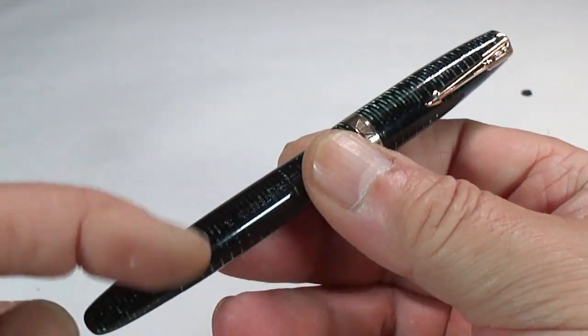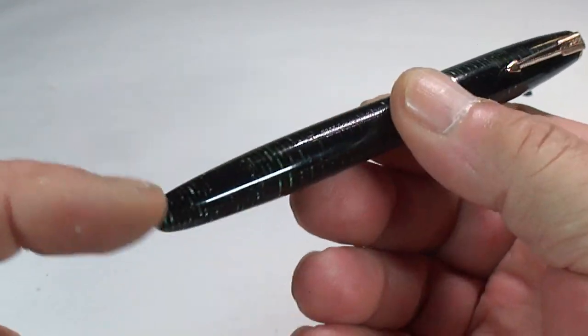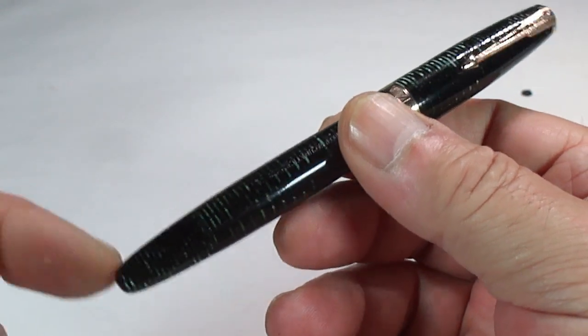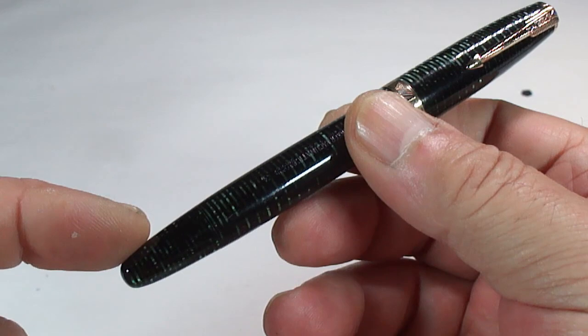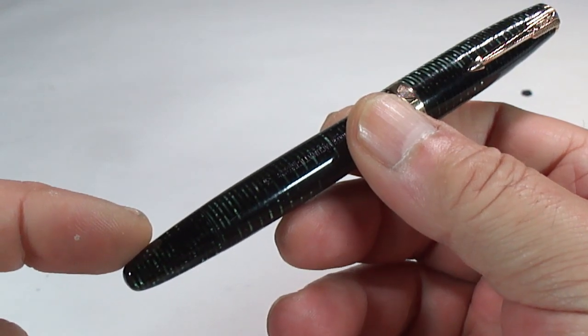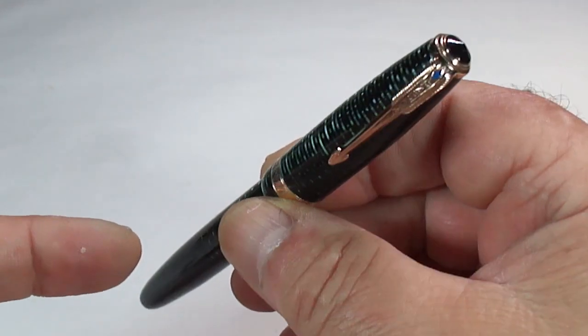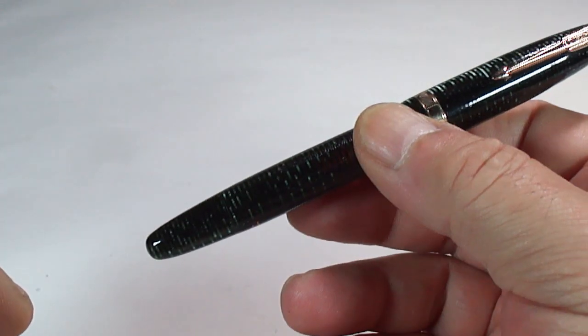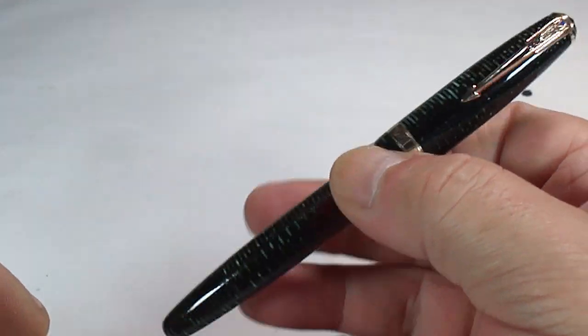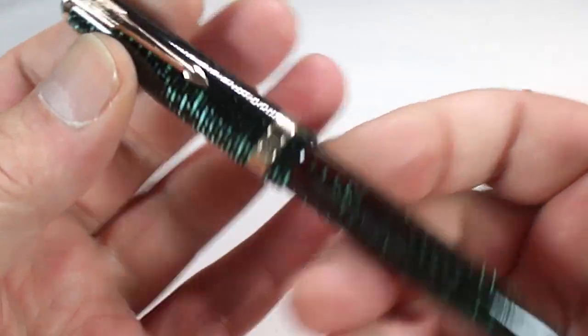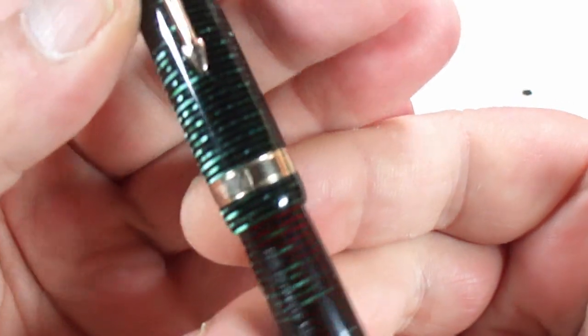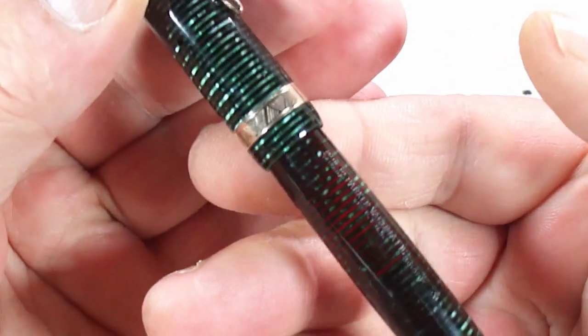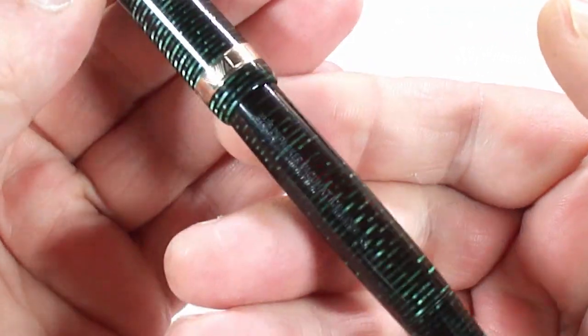So we've got a Parker Vacumatic. This is the third generation with the, as we've just shown you, with a plastic pump filler. Incidentally, I think the plastic pump filler was actually introduced around about 1942, I believe. So 1943 as a date sounds spot on. And again, is it the Parker Vacumatic major with this large cap band with these sorts of chevron patterns going round it? Is that the correct model? Once again, you know, we'd like to help everybody, each other, if it's wrong, let us know.